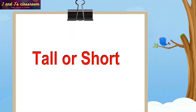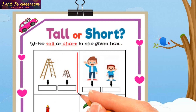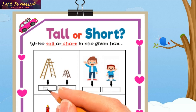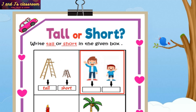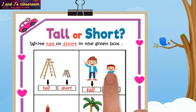Tall or short — write tall or short in the given box. Look at the first question — there are two letters. Which one is tall and which one is short? Tall — right, write tall in the given box. Short — right. Then see the next question — there are two boys. Who is tall and who is short? Tall boy — yes, write tall in the given box. Short boy — yes, write short in the given box.